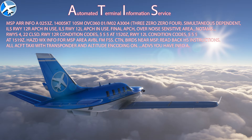This ATIS report is for Minneapolis — a Class B, big airport — so it has an arrival and a departure ATIS. This is the arrival ATIS: information Alpha. When the next report comes out at 0353 Zulu, it will be information Bravo, then Charlie, and so on. Until they get to Z, then the next cycle goes back to Alpha.